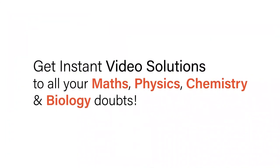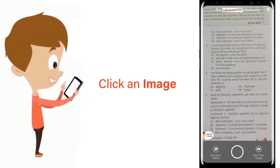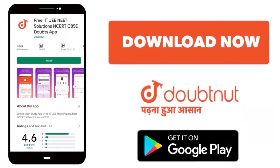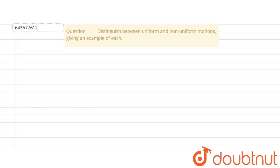With Doubtnet, get instant video solutions to all your maths, physics, chemistry and biology doubts. Just click the image of the question, crop the question and get instant video solution. Download Doubtnet app today. Hello everyone, the question reads: distinguish between uniform and non-uniform motions, giving example of each.